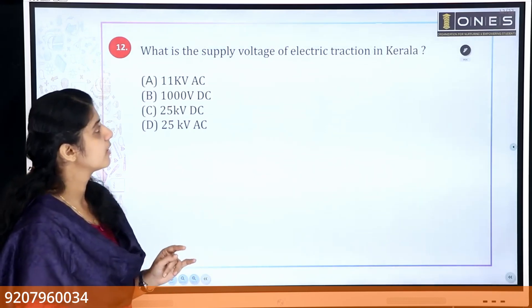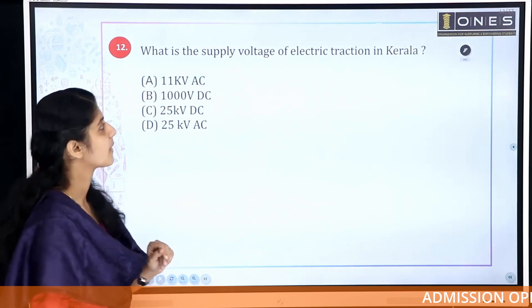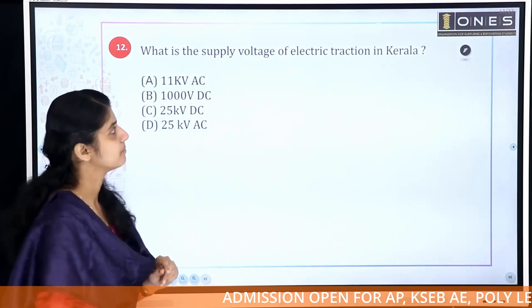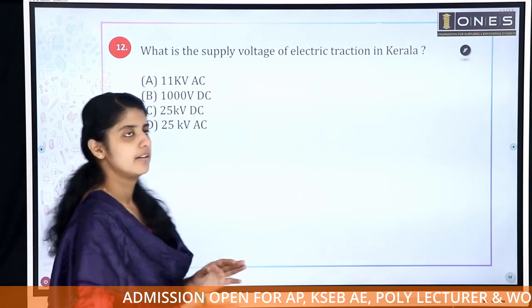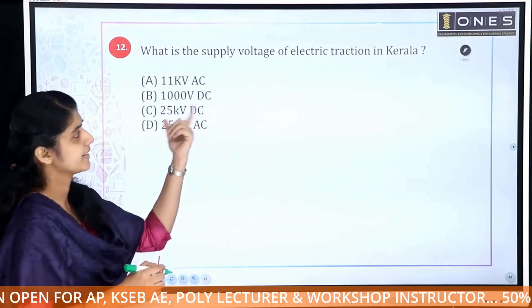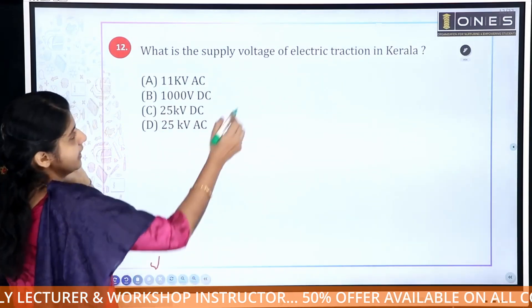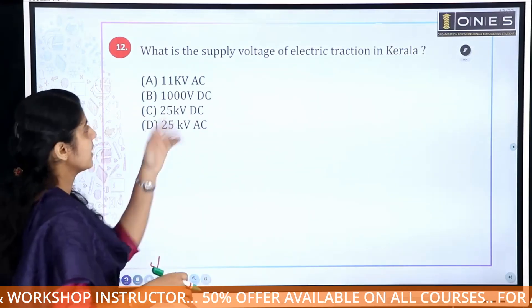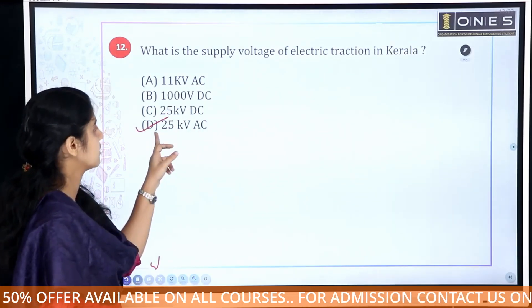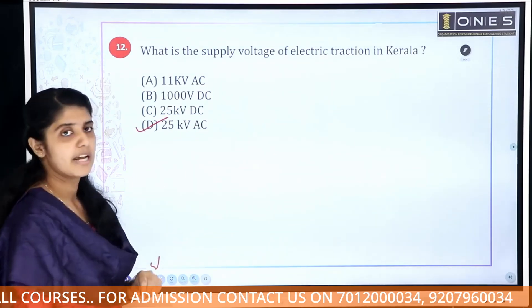Next question: What is the supply voltage of electric traction in Kerala? For electric trains in Kerala, the supply voltage is 25 kV AC.